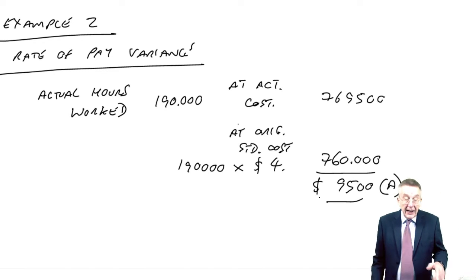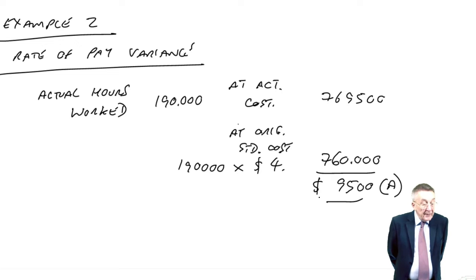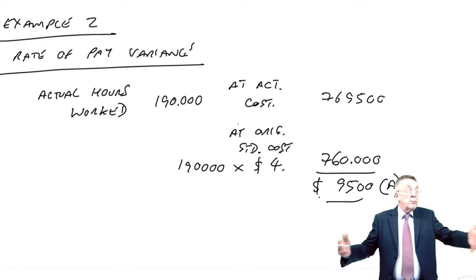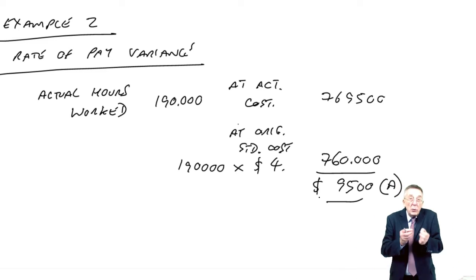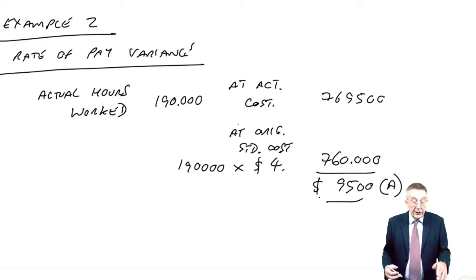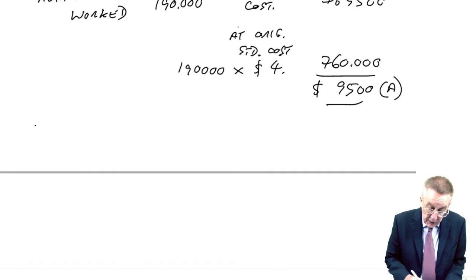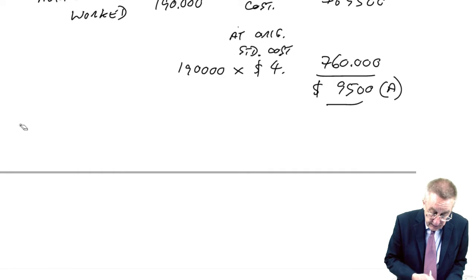However, let me immediately analyze it into planning and operational. Because we're told below that since preparation of the budget, the price had increased to $4.10 per hour. I don't know why, perhaps it's just that wage rates in general have gone up and we'd have no choice, we'd had to increase it. But that permanent change is our planning variance. So the rate of pay, sorry, still on rate of pay, the planning variance.